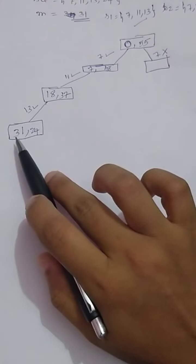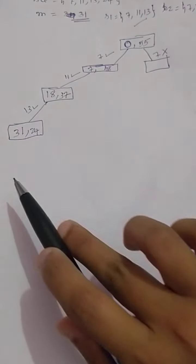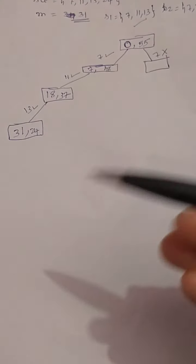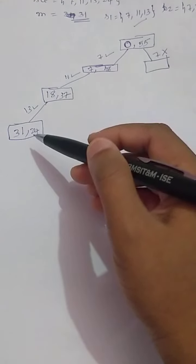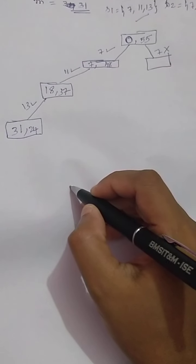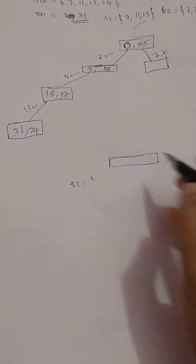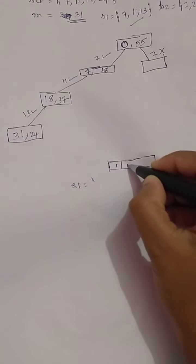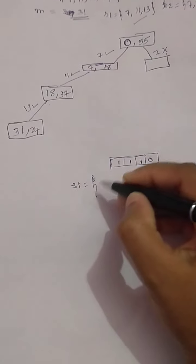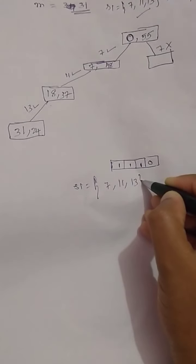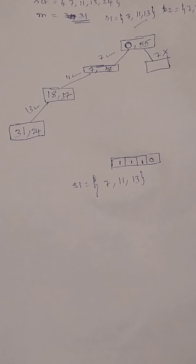I have got the first solution — the sum is exactly 31. If I continue further, the weight would exceed 31, so I stop here. My first solution is: first weight included, second weight included, third weight included, fourth weight not included. In array representation: [1, 1, 1, 0] — weights 7, 11, and 13 are included.